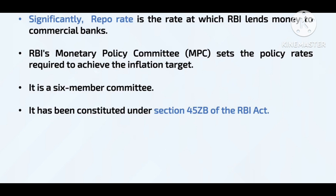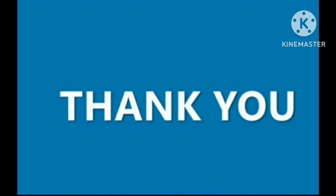There is also a significant concern that loans taken from banks could be converted to NPAs — non-performing assets. Banks need to ensure their CRR is sufficient before giving loans. The deciding committee is the Monetary Policy Committee, which was constituted under Section 45ZB of the RBI Act as a six-member committee that decides policy rates. We hope this session was helpful — share it with friends and stay tuned for the next update in the Prelims Booster series.